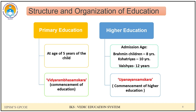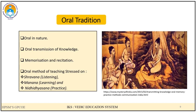Here we see the overview of the Vedic education system. Firstly, the oral tradition, which prevailed from 1500 to 500 BC. The Vedic education system was primarily oral in nature. Students, known as Shishyas, would learn from Gurus through a process of oral transmission. The Vedas were memorized and recited, and this oral tradition was considered the most effective means of preserving sacred knowledge. The oral method of teaching stressed Shravana (listening), Manana (contemplation) and Nididhyasana (practice).